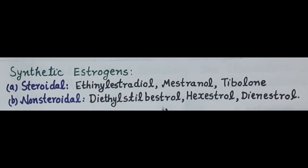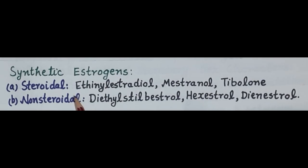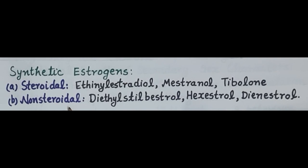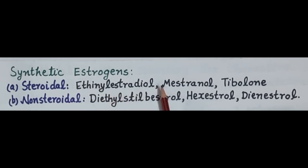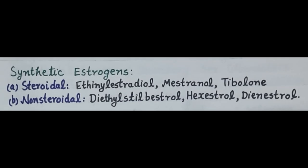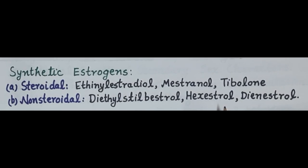All natural estrogens are rapidly metabolized in the liver, making them inactive orally and exhibiting a very short duration of action. Therefore, synthetic estrogens have been developed. Synthetic estrogens are of two types: steroidal and non-steroidal. Steroidal estrogens include ethinyl estradiol, mestranol, and tibolone, while non-steroidal estrogens include diethylstilbestrol, hexestrol, and dienestrol. Synthetic estrogens are primarily used as contraceptives and for hormone replacement therapy.